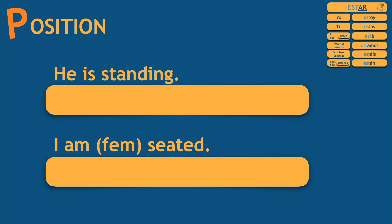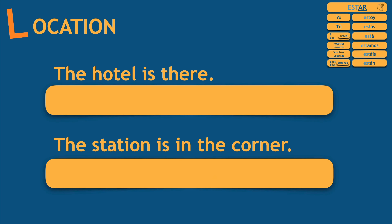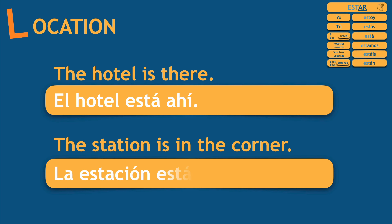We use ESTAR to show position: He is standing — Él está de pie. I am seated, for feminine — Yo estoy sentada. For location: The hotel is there — El hotel está ahí. The station is in the corner — La estación está en la esquina.